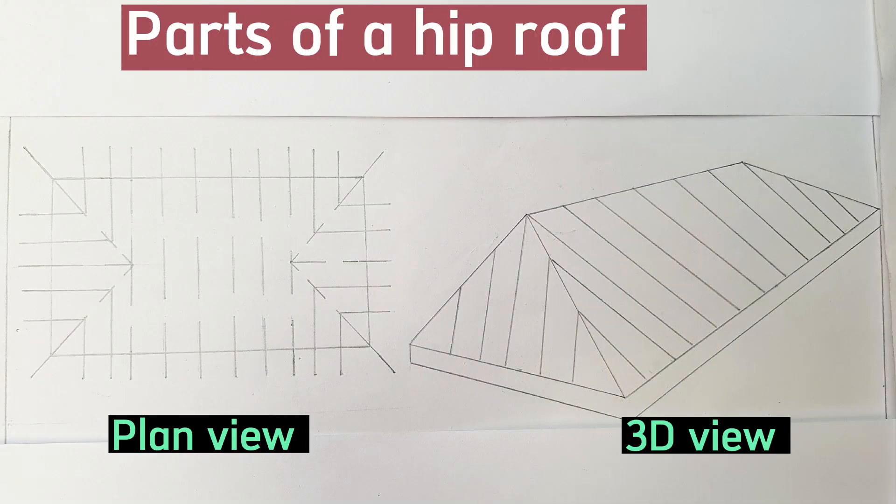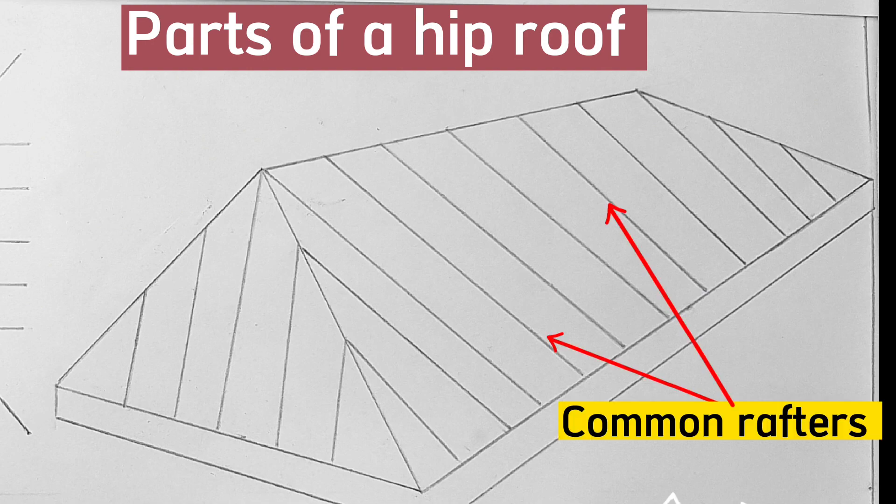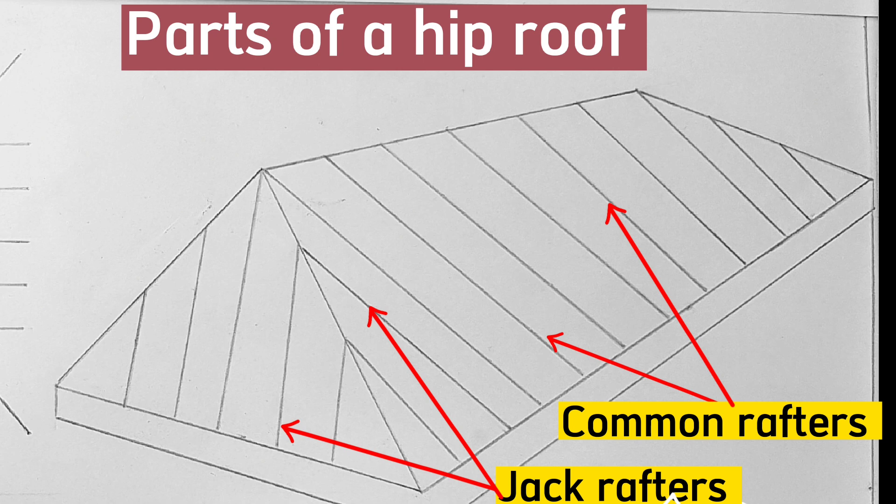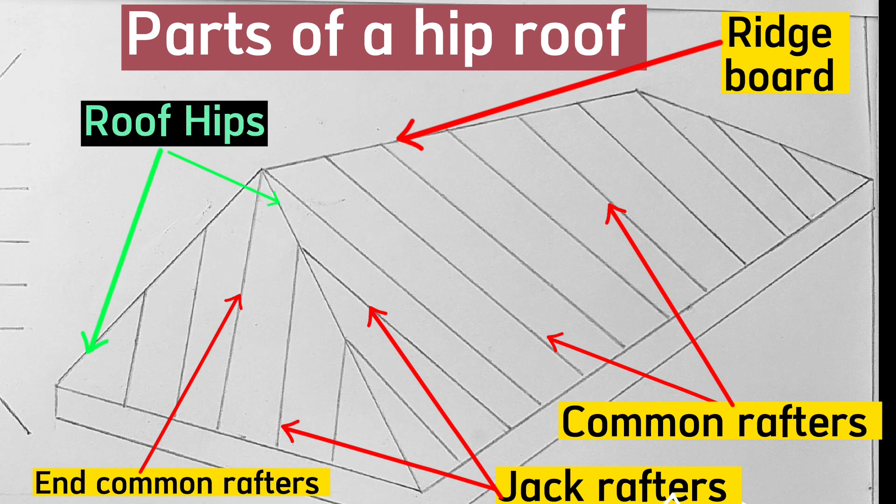First of all, let's clearly understand these parts of a hip roof: the common rafters, the jack rafters, the ridge board, the end common rafters, and the hip rafters, which are our main concern.